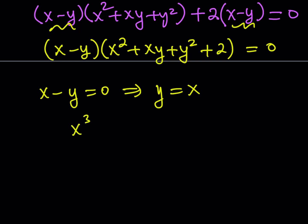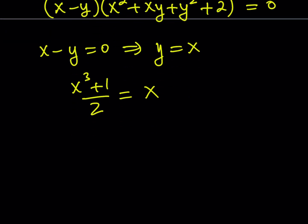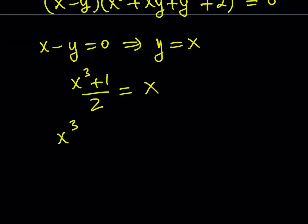So x cubed plus 1 over 2 replaces y, and that equals x. What am I going to do next? Cross multiply and simplify this expression. This gives me x cubed plus 1 equals 2x, put everything on the same side, you know the story, and we get this.